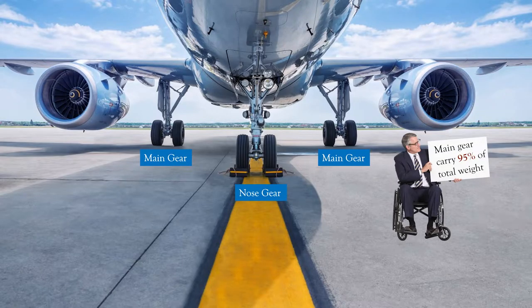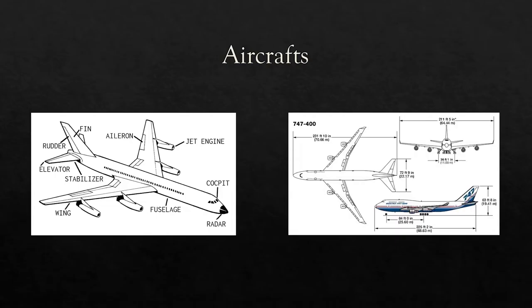The front wheel of the aircraft is called the nose gear, and the back wheels are called the main gear or landing gears. Main gears carry 95 percent of the total aircraft weight, while the nose gear carries only 5 percent. In the design process we will only consider the main gear or landing gears, as they carry most of the load.